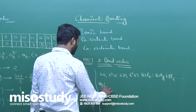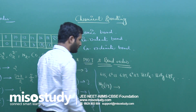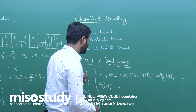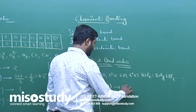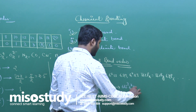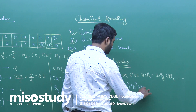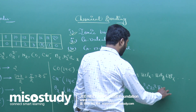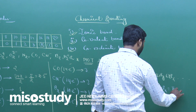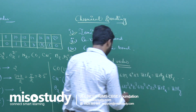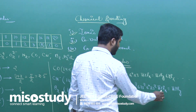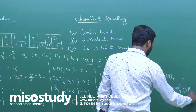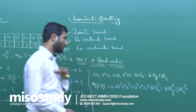Suppose we write the electronic configuration of nitrogen N2. In this case: σ1s², σ*1s², σ2s², σ*2s², π2px², π2py², σ2pz², which accounts for 2, 4, 6, 8, 10, 12, 14 electrons total. This is the configuration.